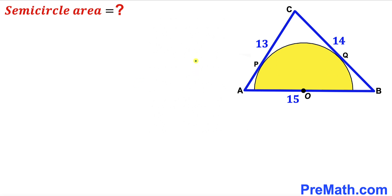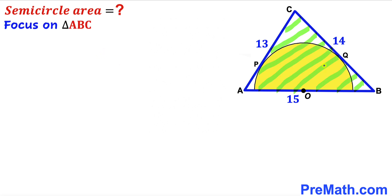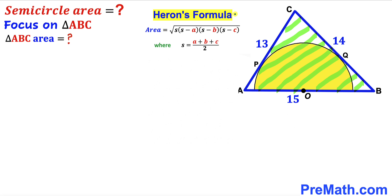Since we are interested in calculating the area of this yellow shaded semicircle, we are going to calculate the radius of this semicircle first. We'll focus on triangle ABC and calculate its area using Heron's formula: the square root of S times (S minus A) times (S minus B) times (S minus C), where S equals (A plus B plus C) divided by 2.